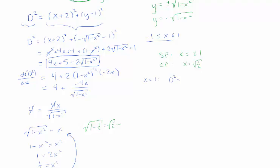When x is 1, my distance squared is 4 times 1 plus 5 plus 2 times the square root of 1 minus 1, which is 9. When x is the square root of 1 half, I get 6 times the square root of 1 half plus 5.